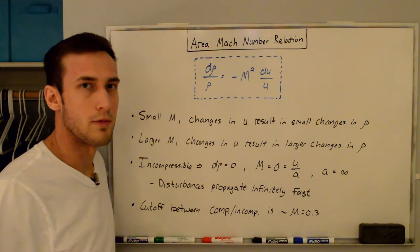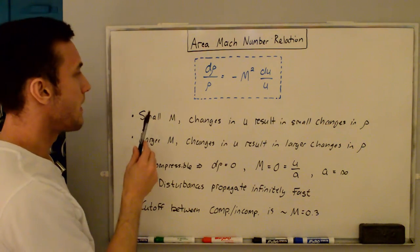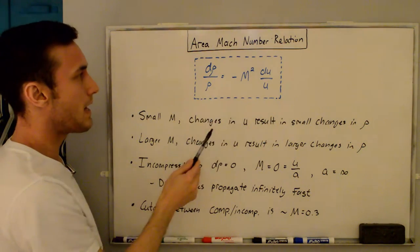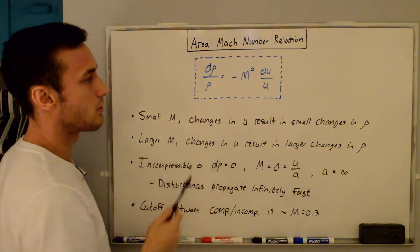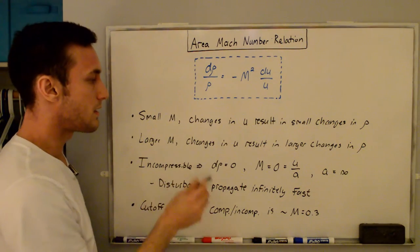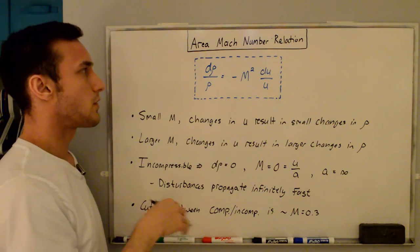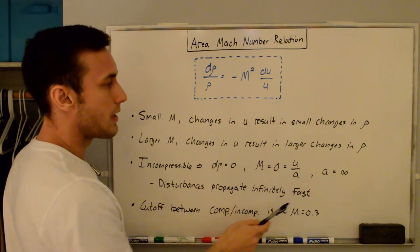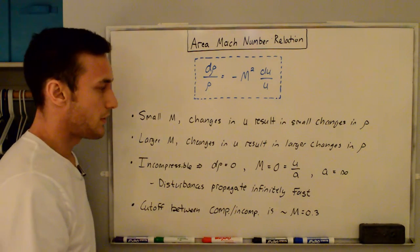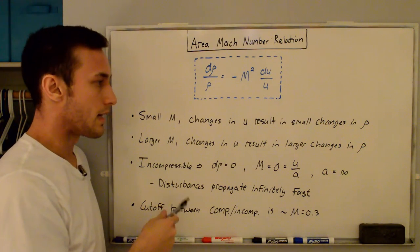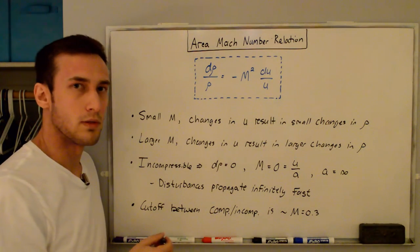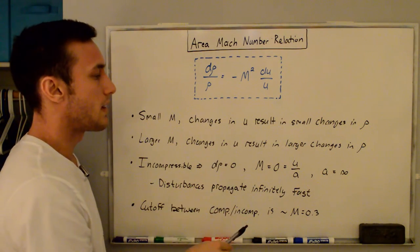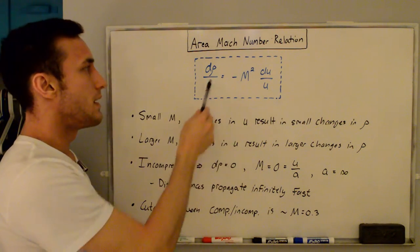This intermediate result gives useful physical insight. For small Mach numbers, changes in velocity result in small changes in density, because M² is even smaller. For larger Mach numbers, velocity changes produce larger density changes. For incompressible flow, the density change is zero, so another way of describing incompressible flow is M = 0, which implies the speed of sound is infinite — meaning disturbances propagate infinitely fast. The cutoff between compressible and incompressible flow is usually cited at approximately M = 0.3; above that, density changes become important.